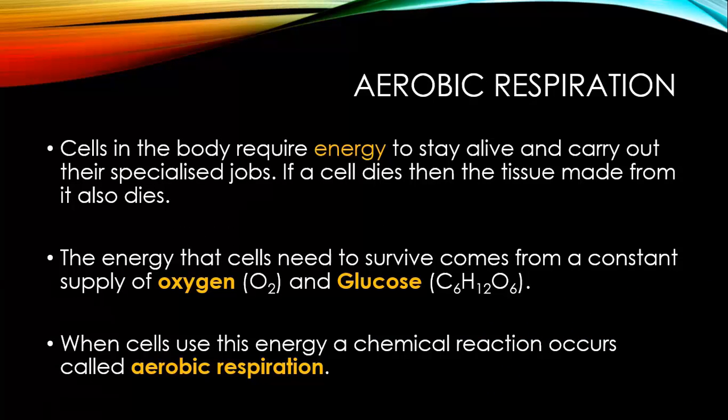The body's made up of different types of cells, and for these cells to survive, they need a constant supply of oxygen and glucose. For them to get that constant supply of oxygen and glucose, a chemical reaction called aerobic respiration takes place. The respiratory system is responsible for that reaction.